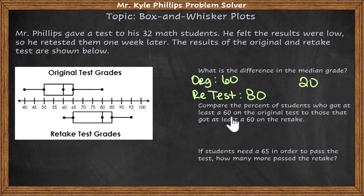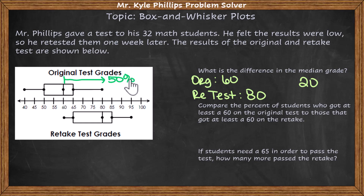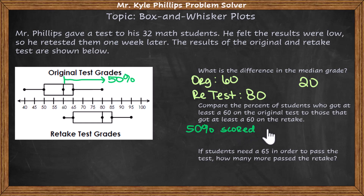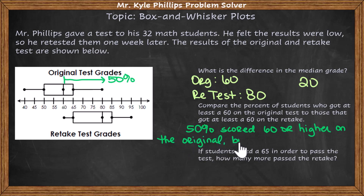Compare the percent of students who got at least a 60 on the original test to those who got at least a 60 on the retake. On the original test, at 60, moving forward, that's 50% who got a 60 or higher. But on the retest, 100% — all the data — got at least a 60. So 50% scored 60 or higher on the original, but 100% did so on the retest.